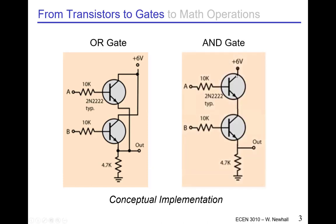For an AND gate, both transistors are in series. To get current to flow through the 4.7K ohm resistor and pull the output high, both A and B have to be saturated — both inputs must be true. If either transistor is in cutoff, there's no connection between the output and the supply — the output is only connected to ground. So this is an AND gate: both inputs must be true for the output to be true.